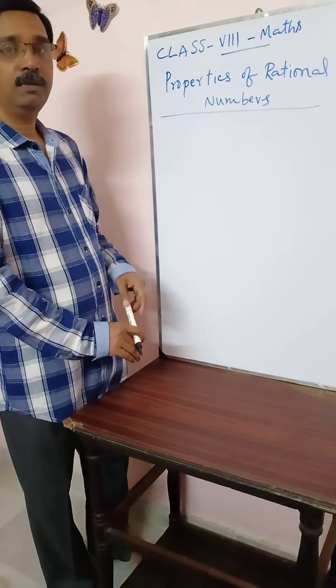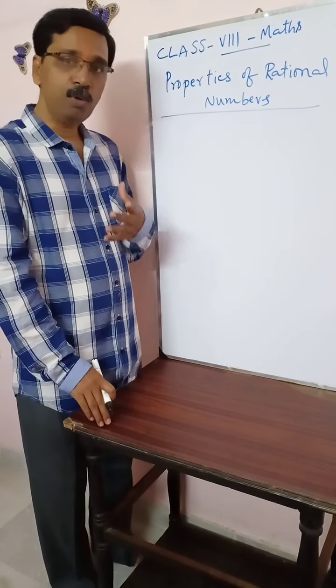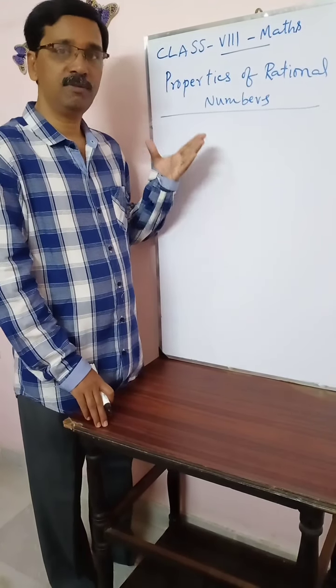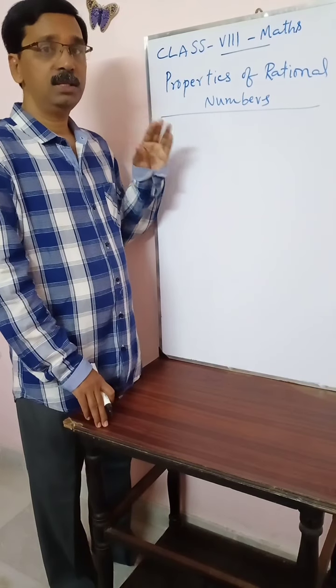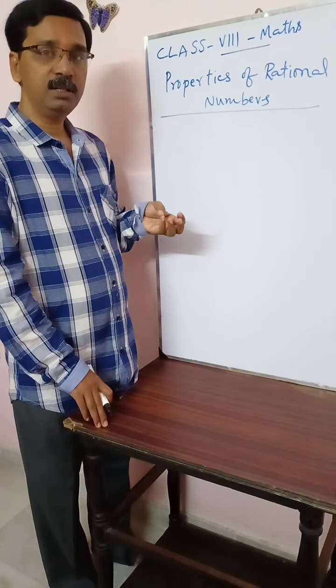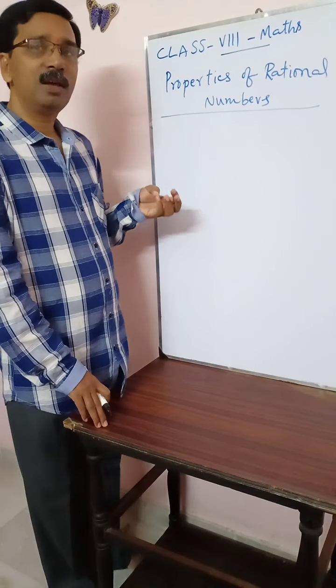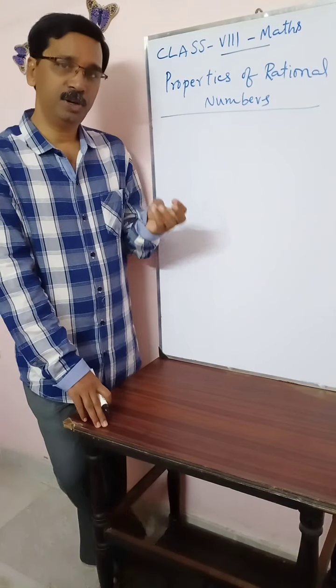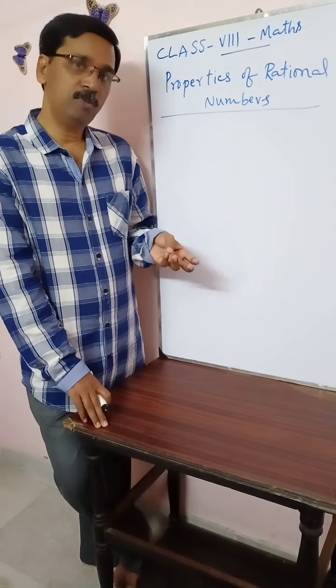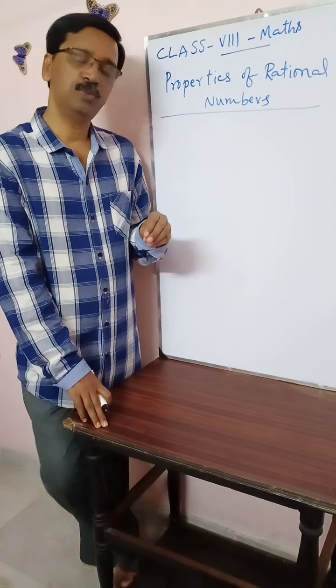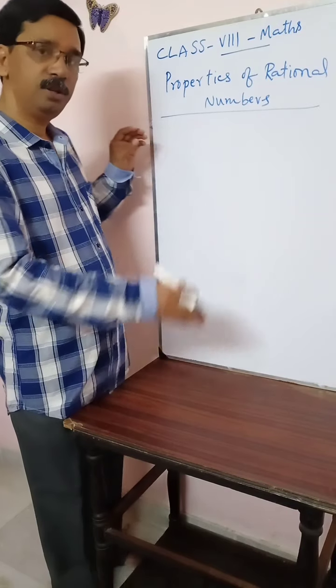Students, today we learn some more properties of rational numbers. Yesterday we saw commutative property, closed property, and associative property.